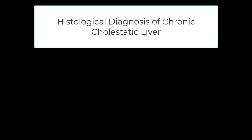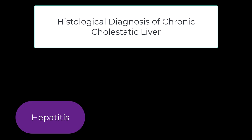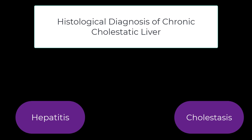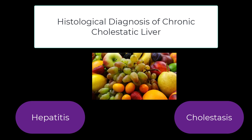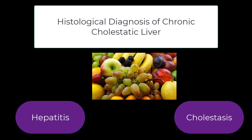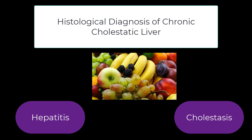So how does one distinguish between chronic cholestasis and hepatitis? This distinction is a very fundamental part of evaluating a liver biopsy. The two diseases, hepatitis and cholestasis, are approached very differently by our clinical colleagues — they're very, very different. Apples and oranges, ladies and gentlemen, apples and oranges.